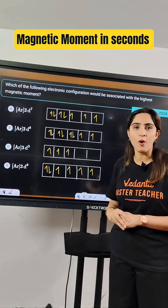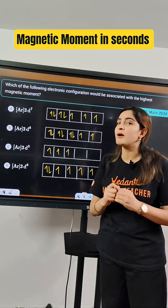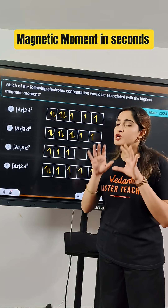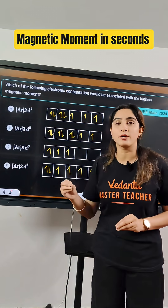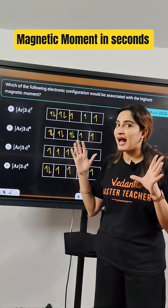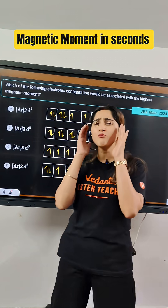And this is your homework question where they are asking you the maximum magnetic moment. What you have to do is calculate the maximum number of unpaired electrons and that is going to be your answer. Write down your answer in the comment section.